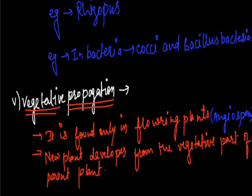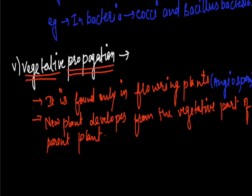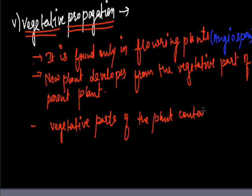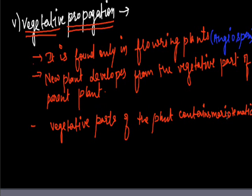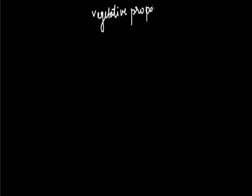This type of reproduction is possible because the vegetative parts of the plant contain meristematic tissue which are capable of division. Vegetative propagation can occur both naturally and artificially.